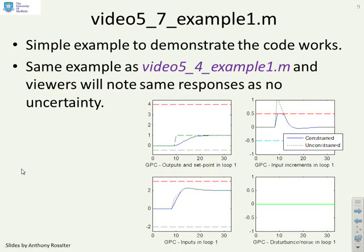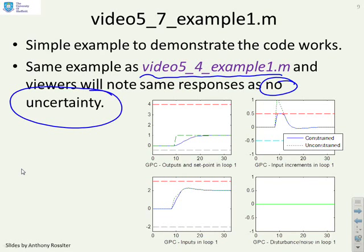So first example, Video 5-7 Example 1. I'm not going to run this one. You'll see it's an identical example to what you had in Video 5-4 Example 1. And you get the same responses because here you'll see it's emphasized there is no uncertainty. And therefore the predictions will be the same, the cost will be the same, the constraints will be the same.